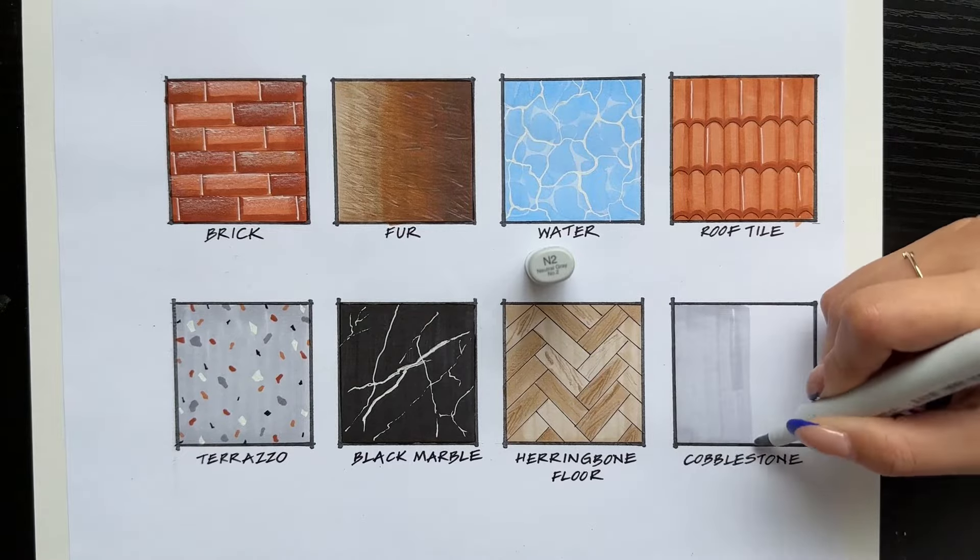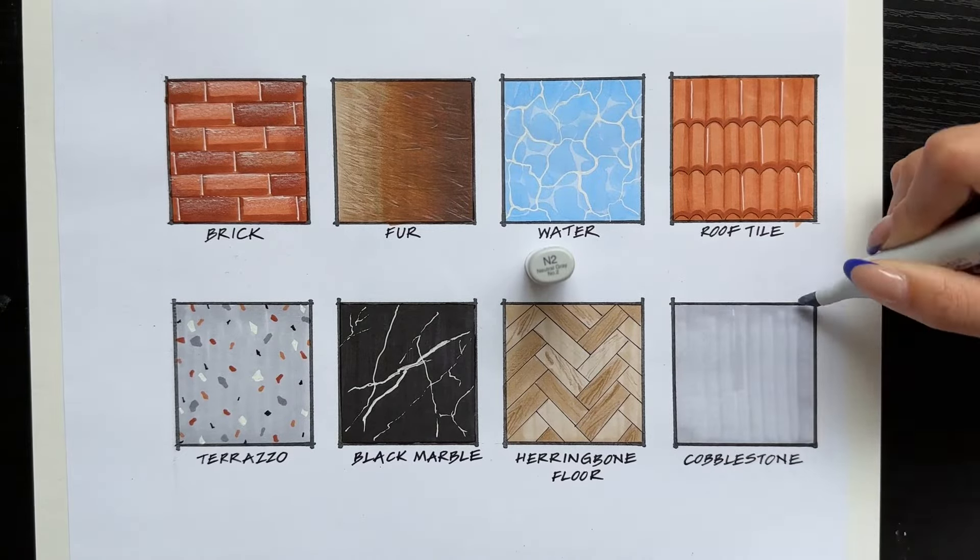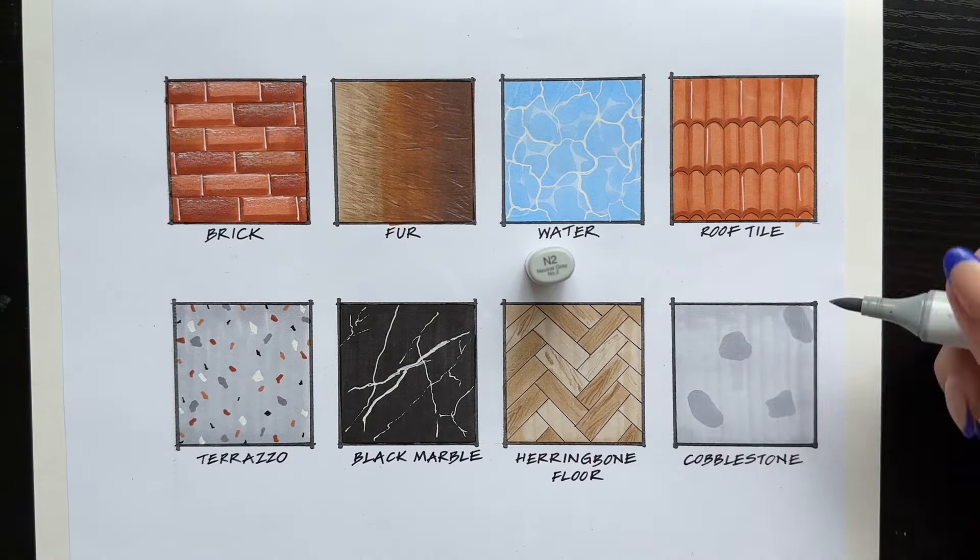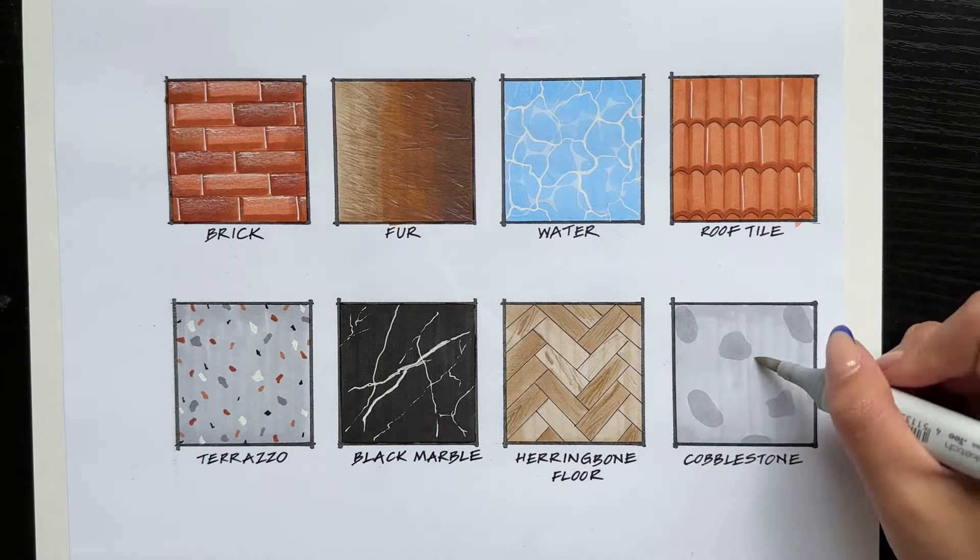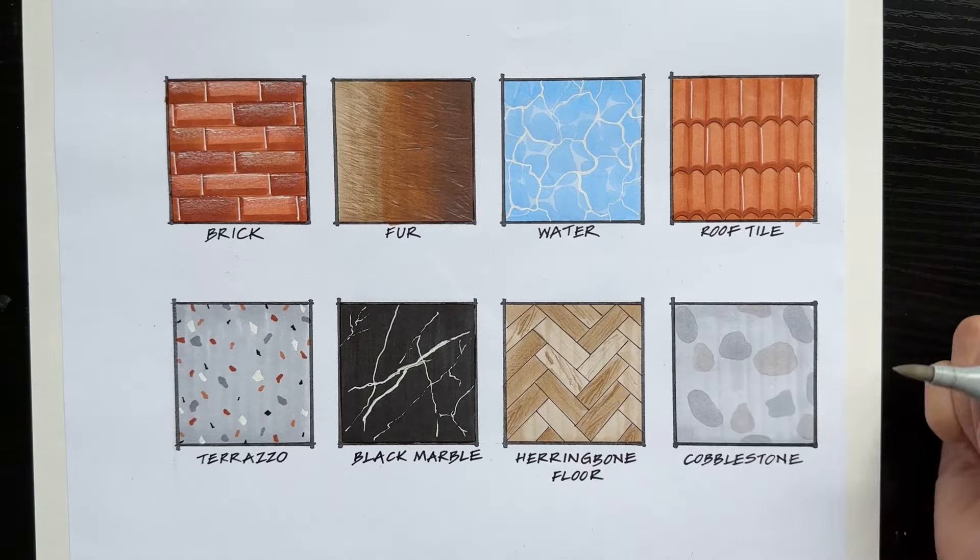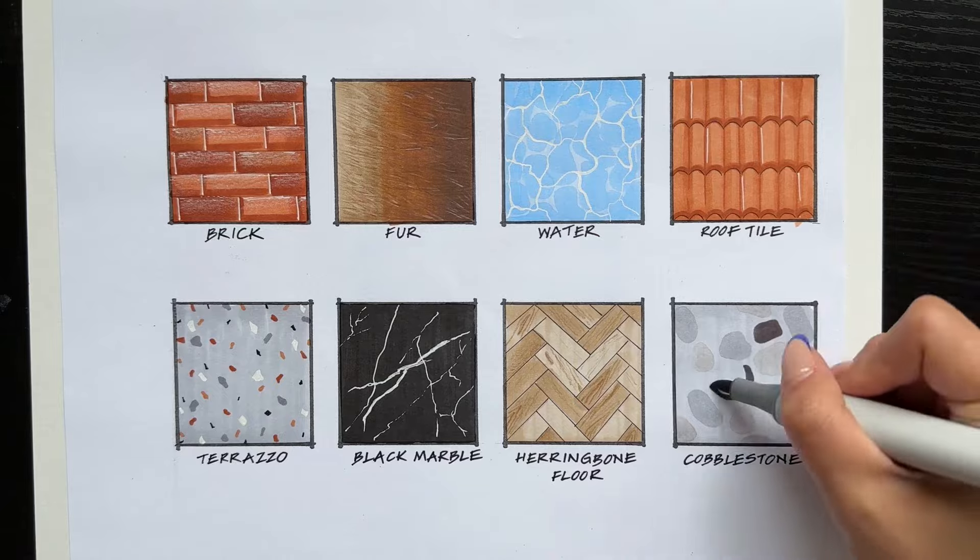Lastly, we have cobblestones. So I'm putting down a base coat using a neutral gray and then using the same marker to create each of the stones. The next color is more of a warm gray. So there's just a bit more variation in the cobblestones.